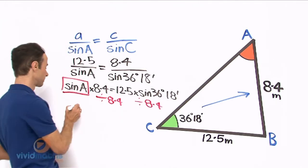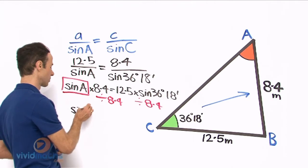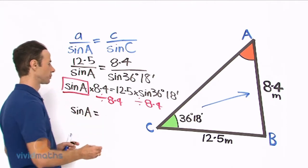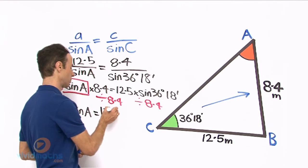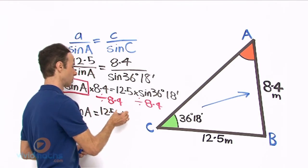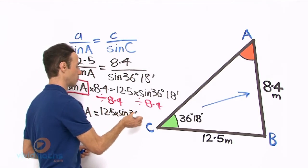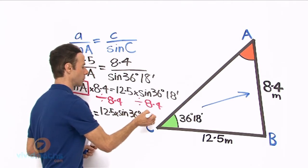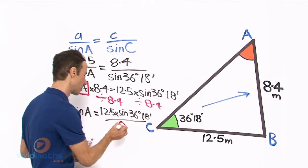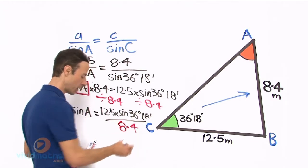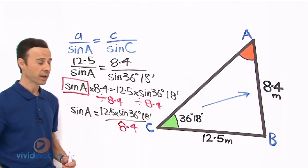Let's divide both sides by 8.4. That is going to yield for us sine a all by itself. We are going to use our calculator now and install it: 12.5 times sine 36 degrees 18 minutes.